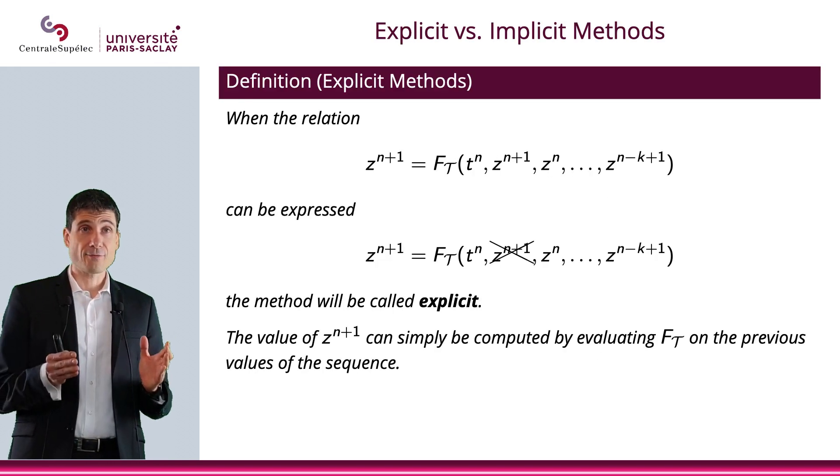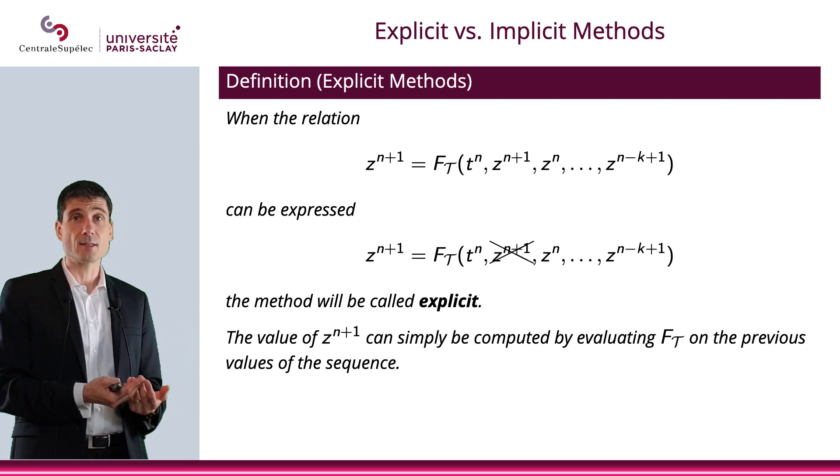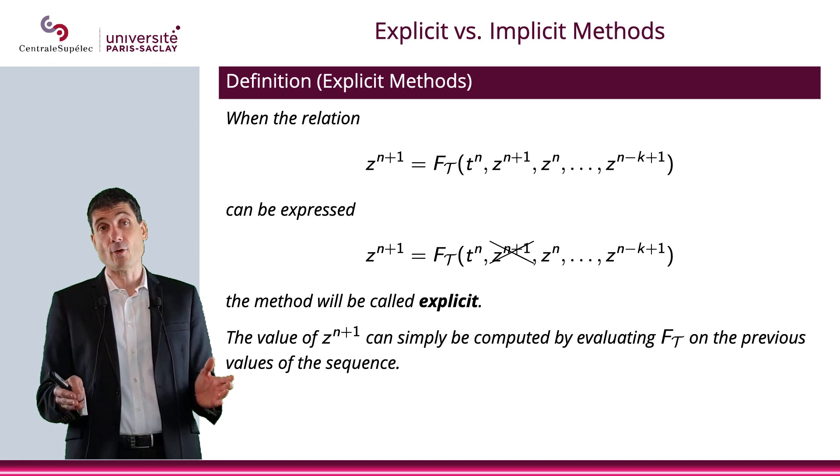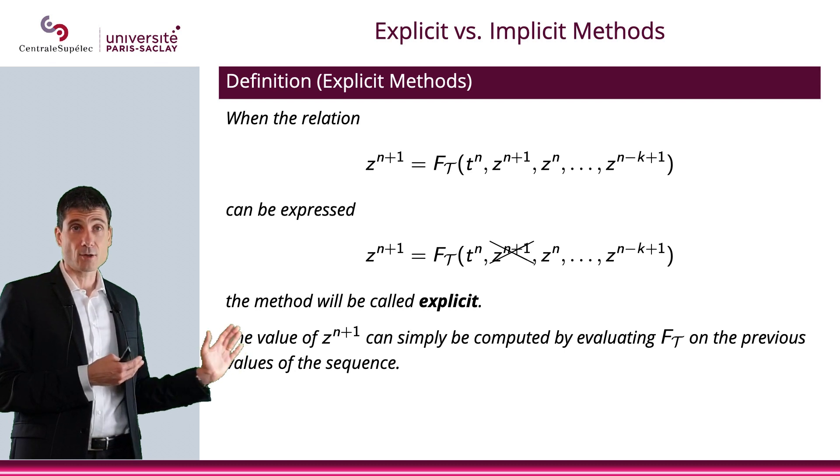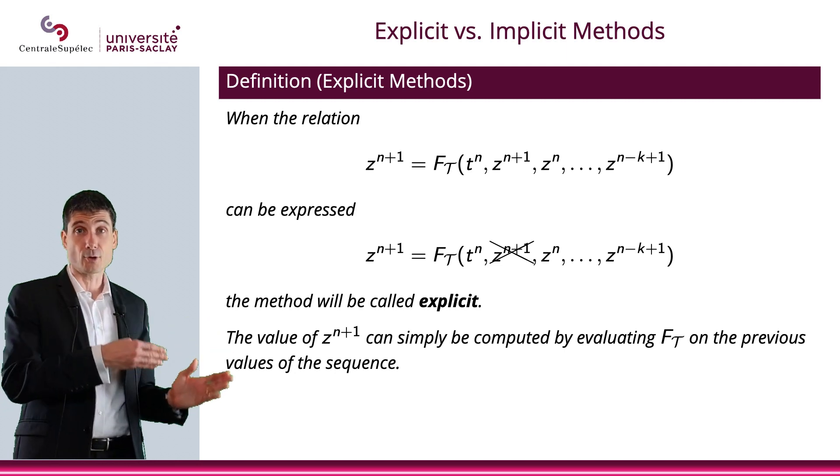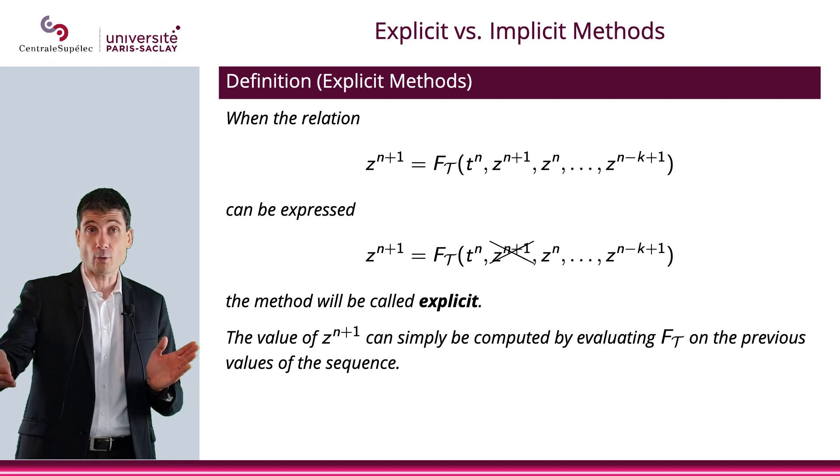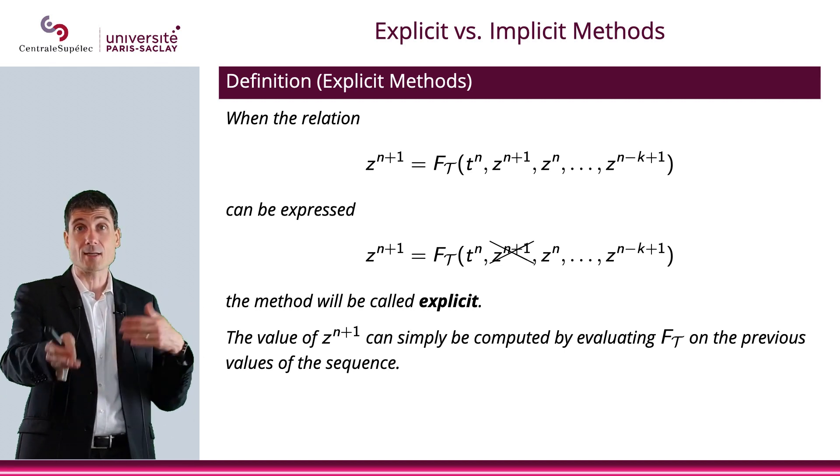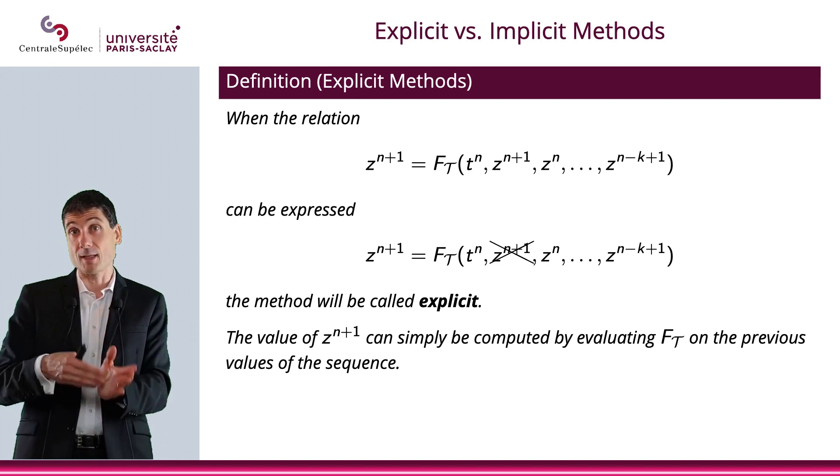If z^{n+1} does not appear in your function F_T, then the method is called explicit. Everyone prefers explicit methods because they're very easy to implement. You can compute z^{n+1} based on t^n, z^n,...,z^{n-k+1}, which are all known. You know everything on the right-hand side, so you can just apply F_T to get z^{n+1}, and then iterate the process. So explicit methods are really easy to implement.